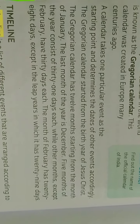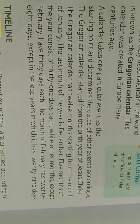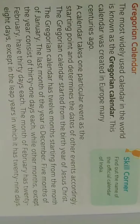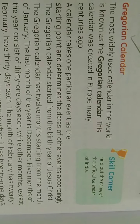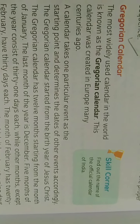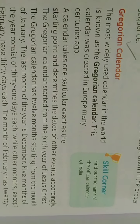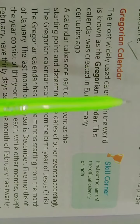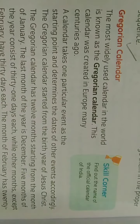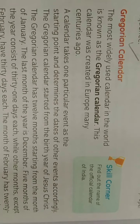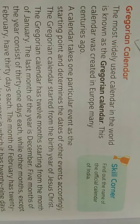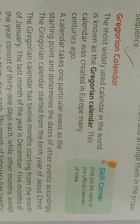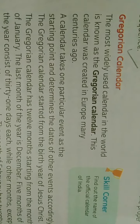The month of February has 28 days, except in leap years in which it has 29 days. So, the most widely used calendar in the world is known as the Gregorian calendar.